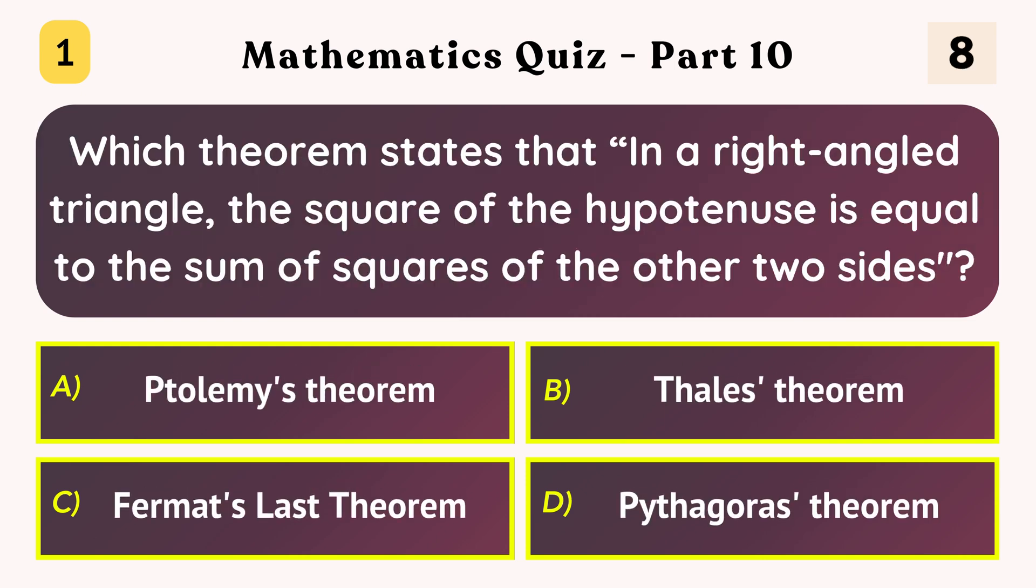Which theorem states that in a right-angled triangle, the square of the hypotenuse is equal to the sum of squares of the other two sides? Pythagoras theorem.